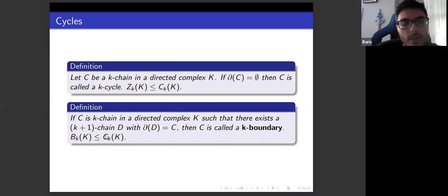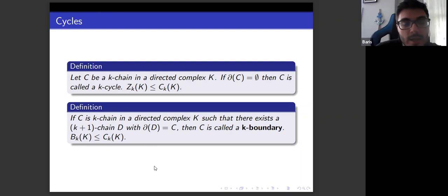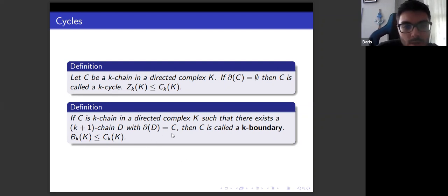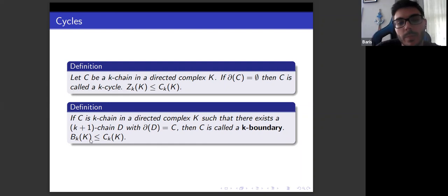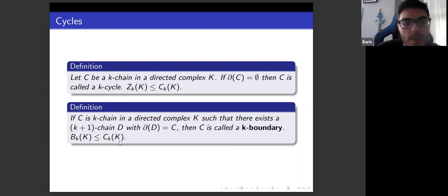For the boundary group: let c be a k-chain and let d be a (k+1)-chain. If the boundary of d equals c, then c is called a k-boundary. We denote the boundary group by B_k, which is also a subgroup of C_k.